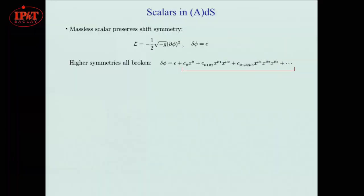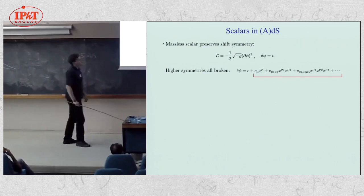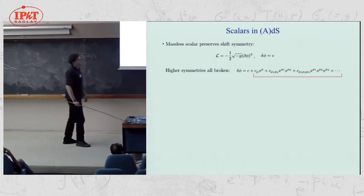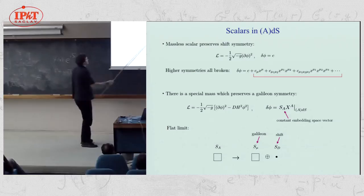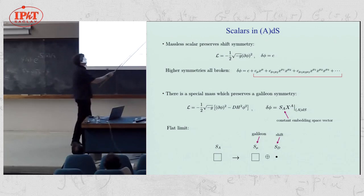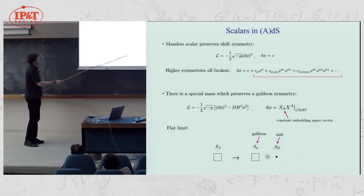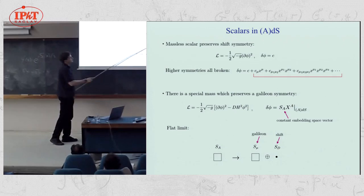Consider a free massless scalar on ADS space. This still has a shift symmetry, but all the higher symmetries with higher powers of X are broken because we're on ADS. However, there's a special value of the mass of the scalar — d times the Hubble squared of the background, where d is the space-time dimension — where you preserve a Galilean symmetry. The Galilean symmetry preserved is essentially the ambient space Galilean symmetry: some five-dimensional vector times the ambient space coordinate, giving five symmetries. In the flat limit, this becomes massless again and those five symmetries decompose into a vector and a scalar, giving the Galilean and shift symmetry of the flat space theory.